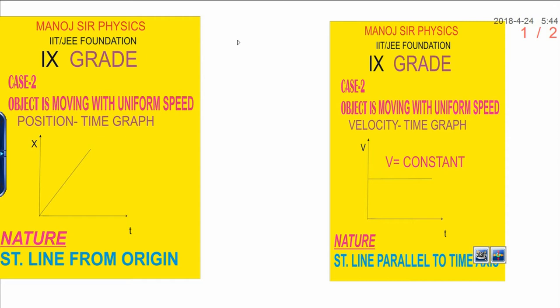In the second case, the object is moving with uniform speed. It means the speed of the object is constant.